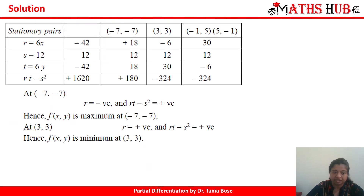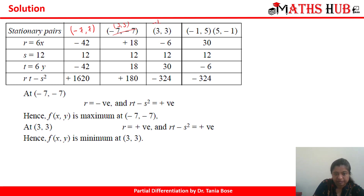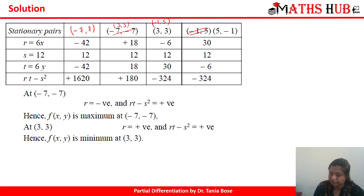We calculate the values of r, s, and t at these stationary points. At (-7, 7): rt - s² is positive and r is negative, so it is a point of maxima. At (3, 3): rt - s² is positive and r is also positive, so it is a point of minima. These two results confirm our required conclusion.